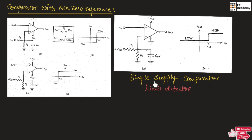Now let us understand the single supply comparator. This single supply comparator is similar to the comparator we just discussed, where we are using two supplies: plus VCC and minus VEE. In place of minus VEE, we will be connecting the terminal to ground. That is why we are using only one supply here, plus VCC. It is known as a single supply comparator.